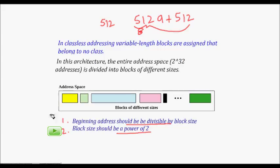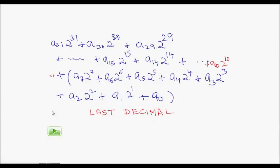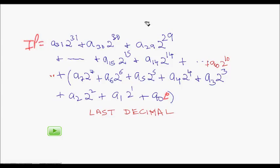An IP address can be represented as a31 × 2^31 + a30 × 2^30 + ... + a1 × 2^1 + a0 × 2^0. This helps us find divisibility. If we want to check if a start address is divisible by 256, note that 256 is 2 to the power of 8. So we write the IP address as a sum of powers of 2.